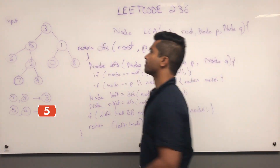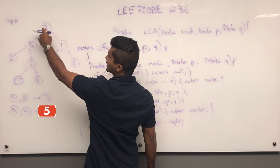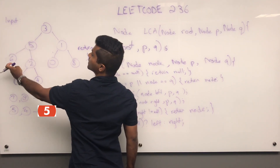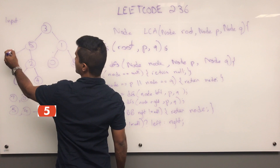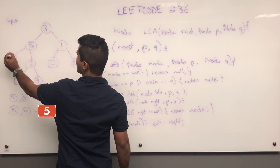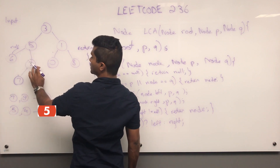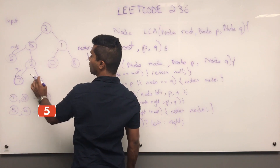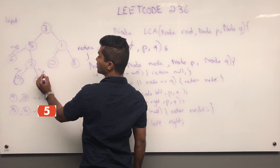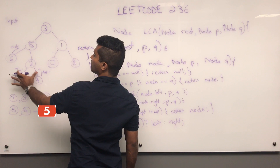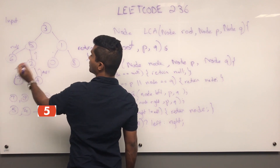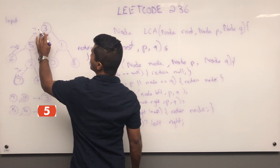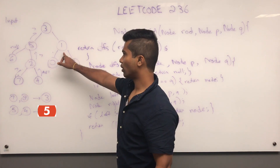Let's trace through the example. Three is going to ask its left and right child because three is not a target node. Five says it's not a target node either, so it asks its left and right children. Six returns null. Two tells five: hold on, let me check — seven says it's a target node, four says it's not a target node and has no target nodes. Two finds something and passes seven up to five. Five sees it's not null and passes it up to three, which is still waiting on the right side.